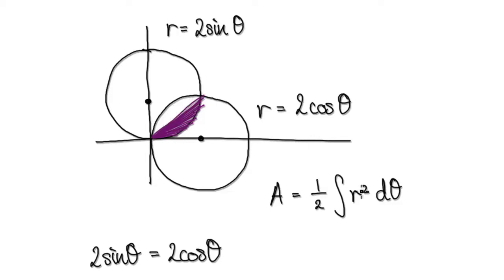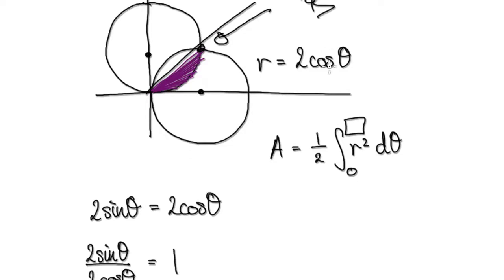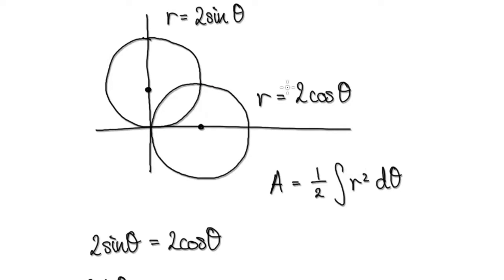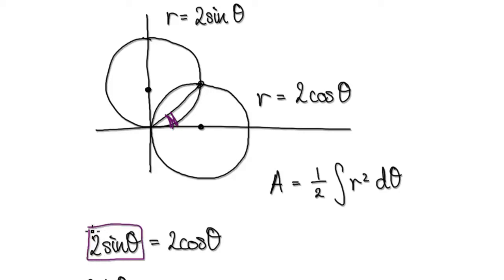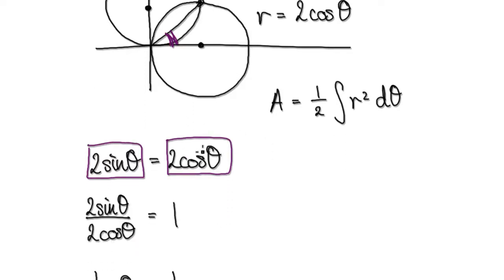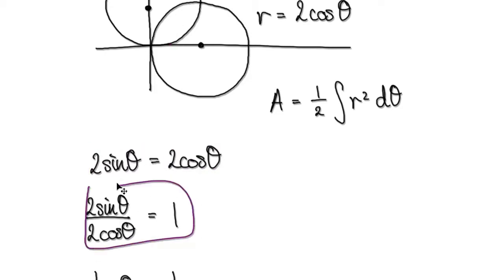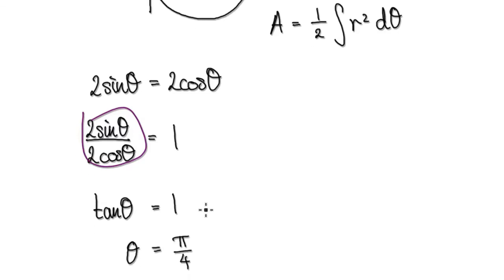Our first step is to integrate from 0 to — we need to figure this out. At the back of your mind, know that this should be at 45 degrees, which is π/4. But let's work it out properly. We are trying to find at what angle the radius of this circle equals the radius of the other circle. Setting 2sinθ = 2cosθ and dividing both sides by 2cosθ gives tanθ = 1, so θ = π/4.